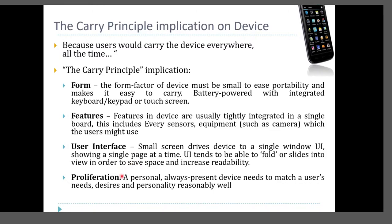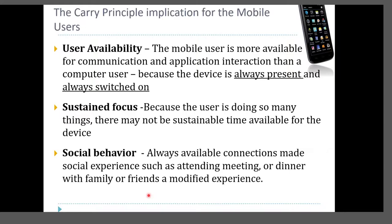A mobile device is also proliferate — it is a personal, always-present device that needs to match the user's needs, desires, and personality reasonably well. It is also identifiable. The mobile device caters to user availability, which is in agreement with the mobile user characteristic of availability. The mobile user is always available when using a mobile device, and even when the device is in standby, the main intention of purchasing it is to make yourself always and ubiquitously available.